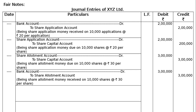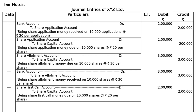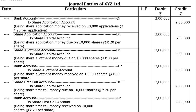The next entry is First Call due: Share First Call Account debited to Share Capital Account — Rs.2,00,000. Then First Call received: Bank Account debited to Share First Call Account — Rs.2,00,000. Narration: being share first call money received on 10,000 shares at the rate of Rs.20 per share. First call due, then received; then second call due, then received.